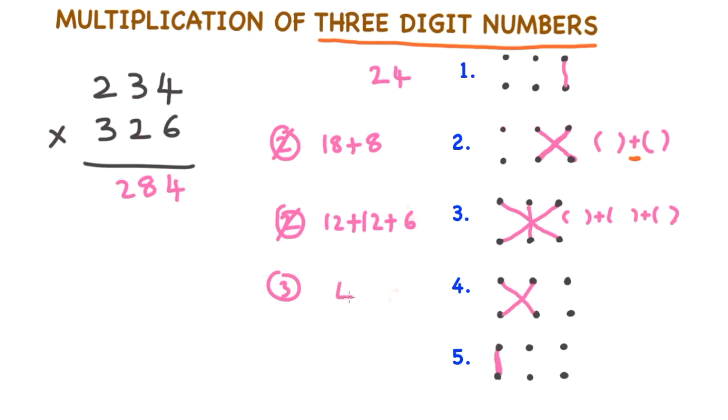Step 4: 2 into 2 is 4, plus 3 is 9, plus 4 is 13, plus 3 is 16. 1 is carry over. Last step: 2 into 3 is 6, 6 plus 1 is 7.